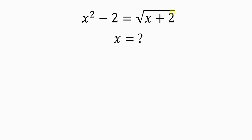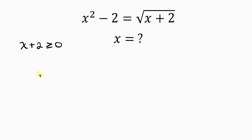Because of this square root on the right-hand side, there's going to be a condition attached to this question. Because what we have on the right-hand side is positive, it shows that what we have inside of the square root — which is x plus 2 — must be bigger than or equal to 0 to make it a real value. So we're going to be taking this condition into consideration when we want to determine our final answer.